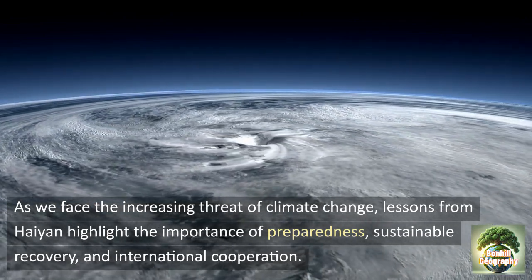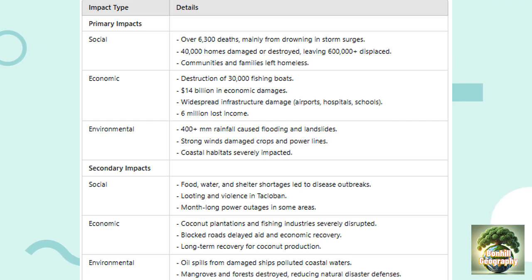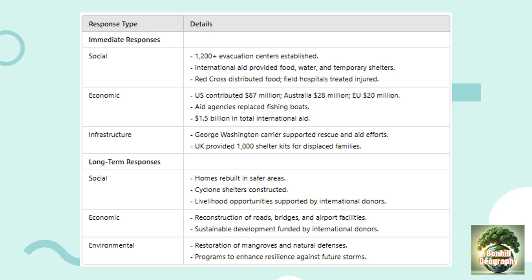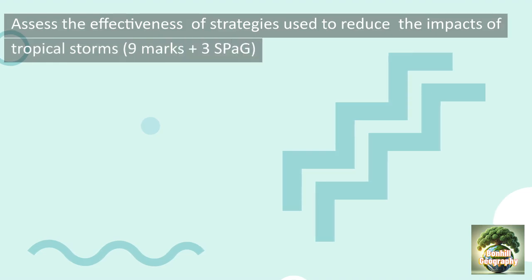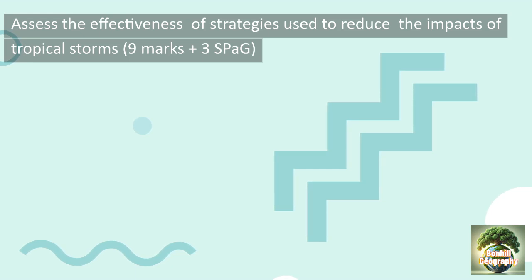On the next two slides, you'll find summaries of everything discussed in today's lesson. On the next slide is an example of a model answer for this question — please do watch my nine-mark question guide if you are struggling to answer them in your exams. This question asks you to assess the effectiveness of strategies used to reduce the impacts of tropical storms, worth nine marks and three SPaG. The model answer uses an alternative structure of two paragraphs and a conclusion.